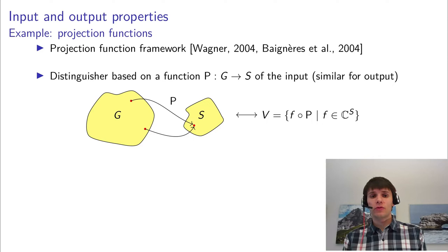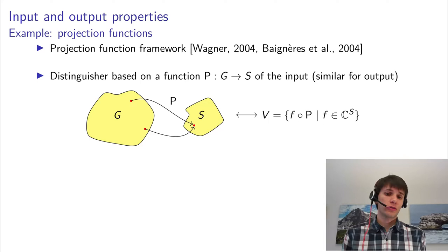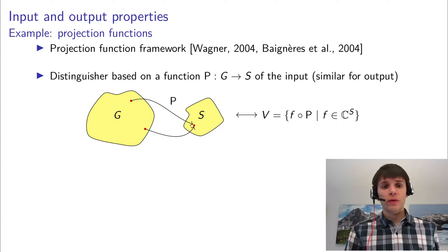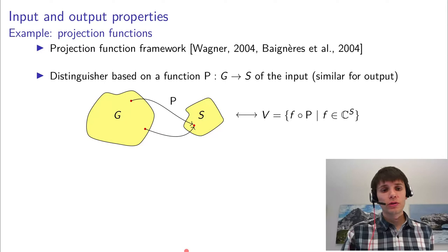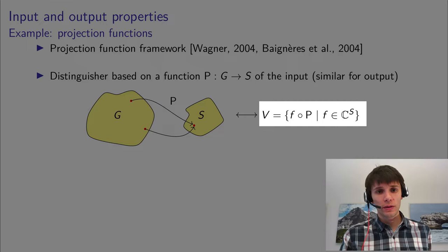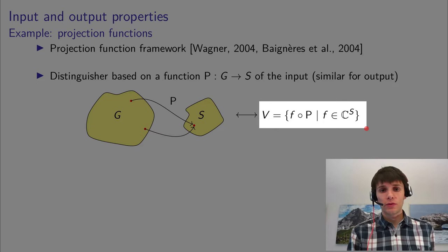And that projection is just a function, a sort of compression from the domain of the cipher to a much smaller set S. What I will want to do here is show that these projection functions can all be described within the geometric framework. So we need to associate a vector space of functions to them that accurately represent that property, which basically is all the functions from S to the complex numbers composed with the projection.